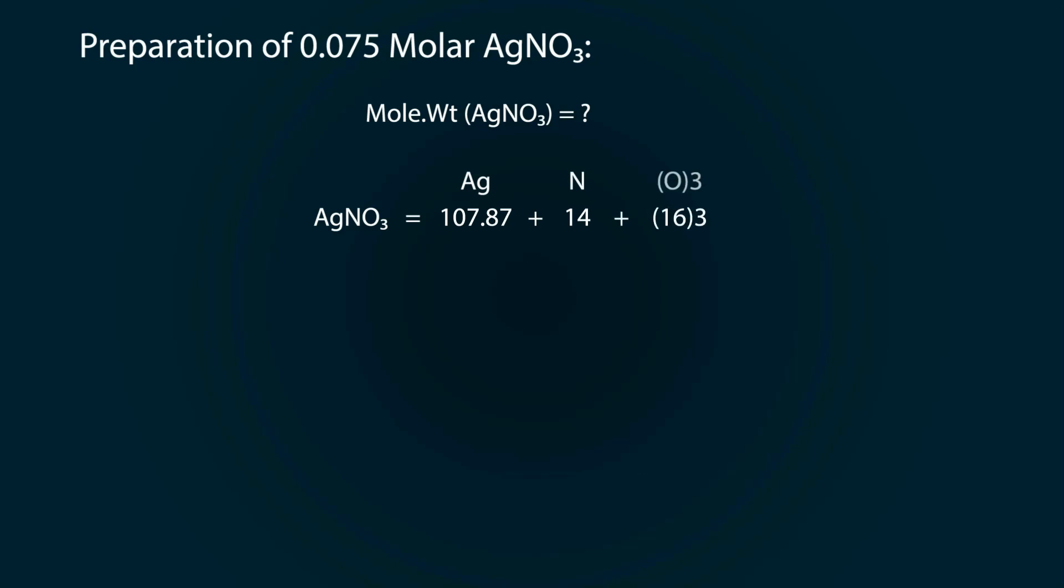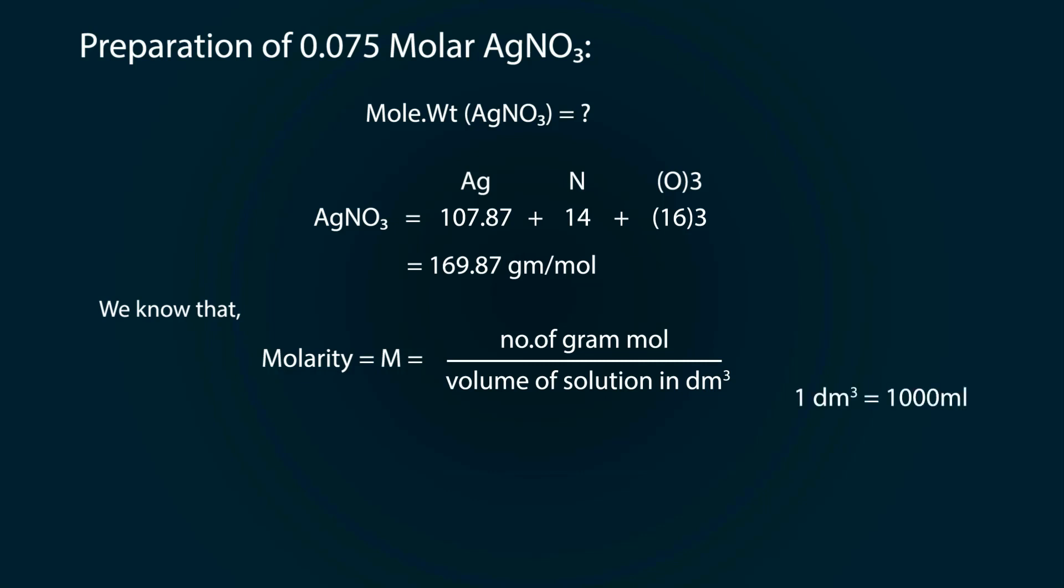After calculation, we have 169.87 grams per mole. We know that the formula of molarity is number of gram moles divided by volume of solution in dm³. One dm³ is equal to 1000 mL.